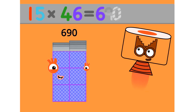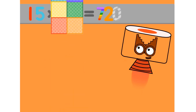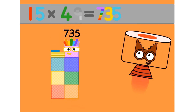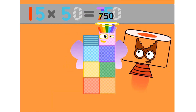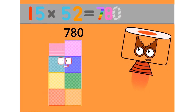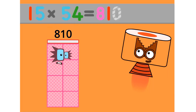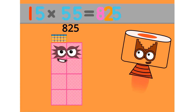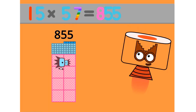15 x 45 equals 675. 15 x 46 equals 690. 15 x 47 equals 705. 15 x 48 equals 720. 15 x 49 equals 735. 15 x 50 equals 750. 15 x 51 equals 765. 15 x 52 equals 780. 15 x 53 equals 795.